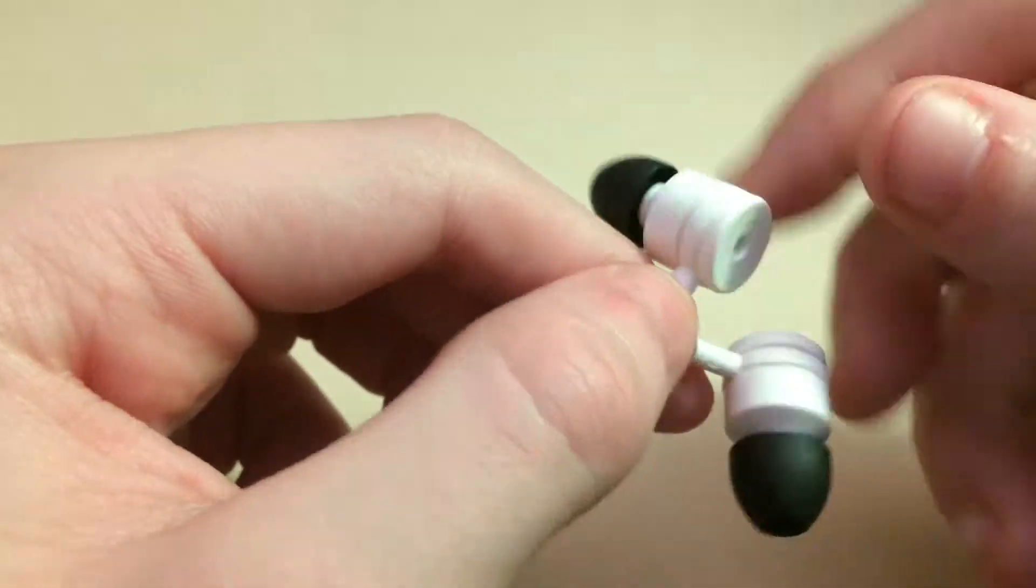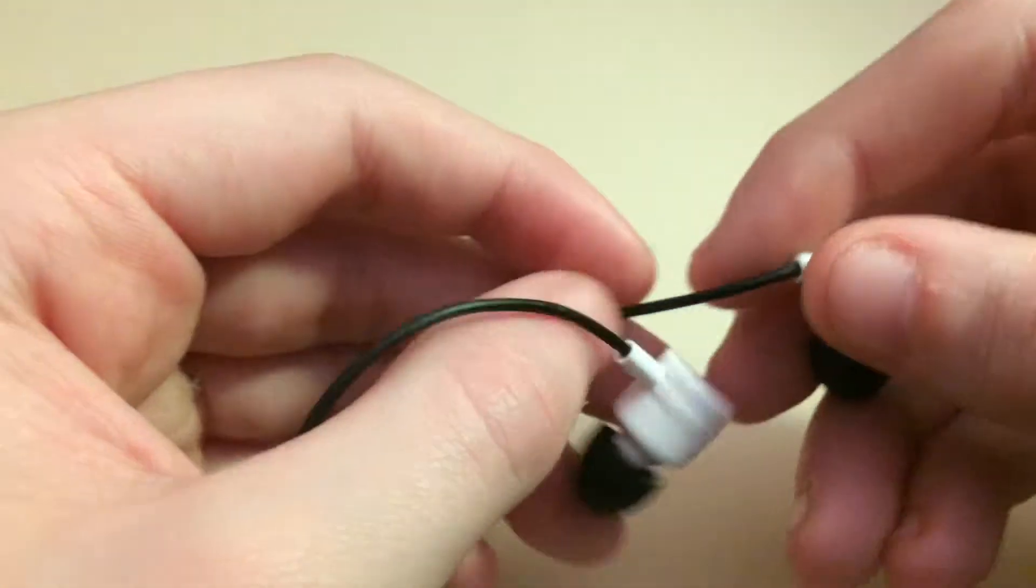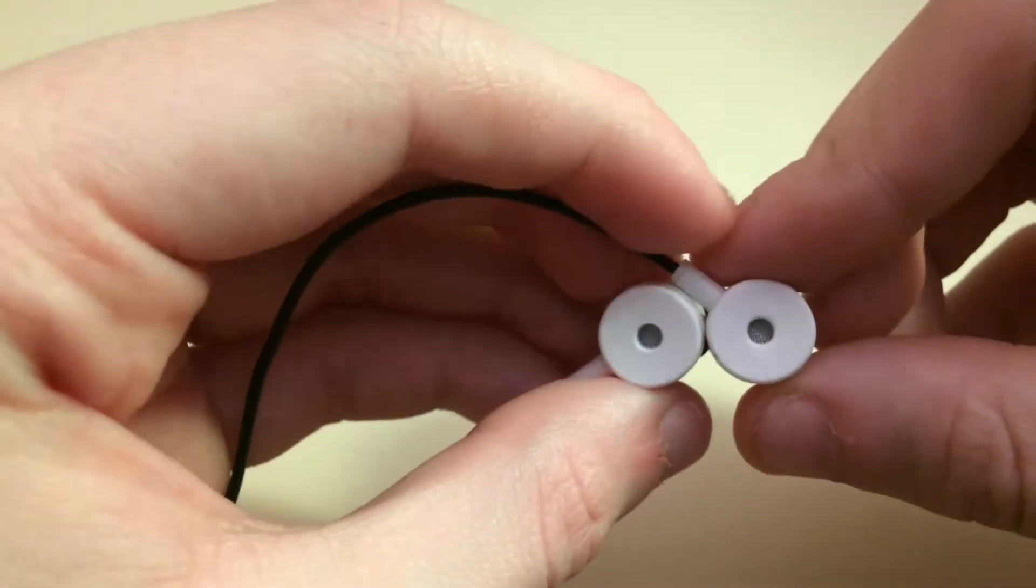Then wipe it inside. If your earbuds have holes in the back like these where extra bass is coming through, make sure nothing gets inside there either.